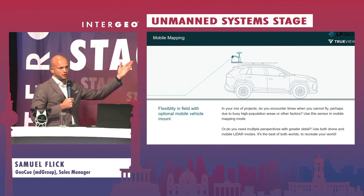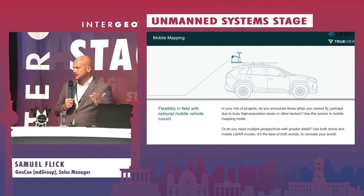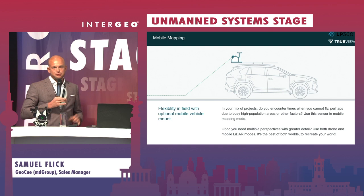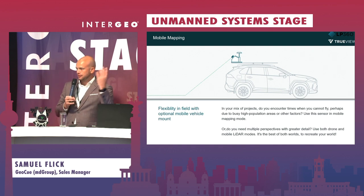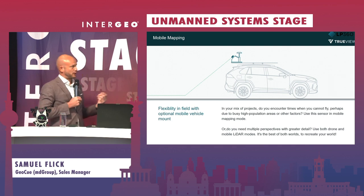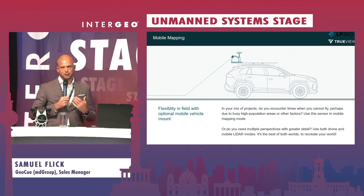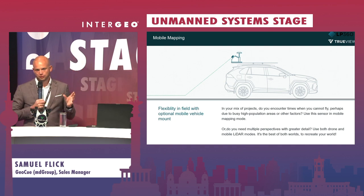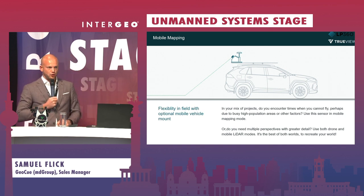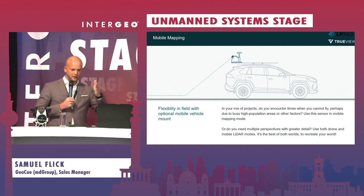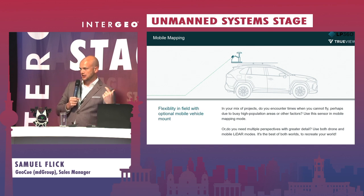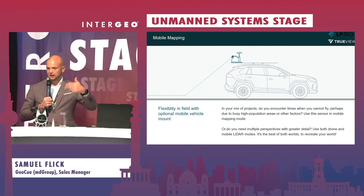One more thing to consider is whether the sensor is also capable of mobile mapping. I'd note this is an addition to drone operations, not a replacement for dedicated mobile mapping systems like the Trimble MX9. For example, one client couldn't fly over the Autobahn due to German airspace regulations, so he flew as close as possible and then mounted the sensor on a car to capture the remaining data.